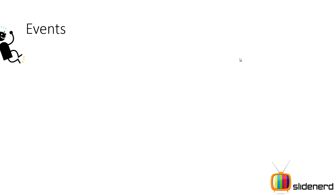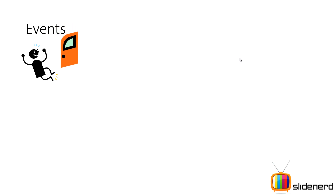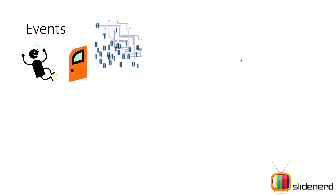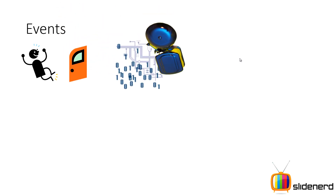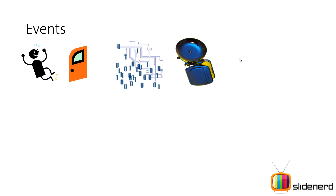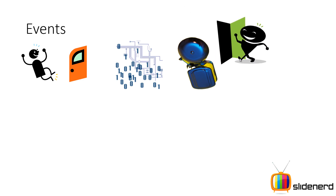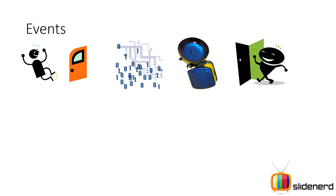I have already discussed about events previously in my video about button click. Here I am going to give you a small overview. There is a person at your door and she rings your doorbell. The door circuit gets triggered and the doorbell rings. Now remember, everybody hears the doorbell but only one person comes outside and opens the door. The same way events work in Android.